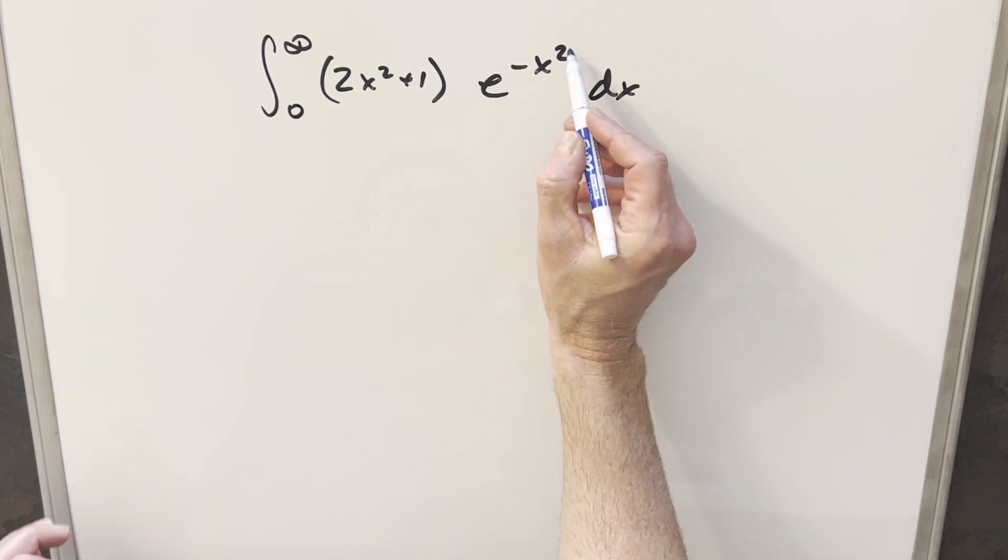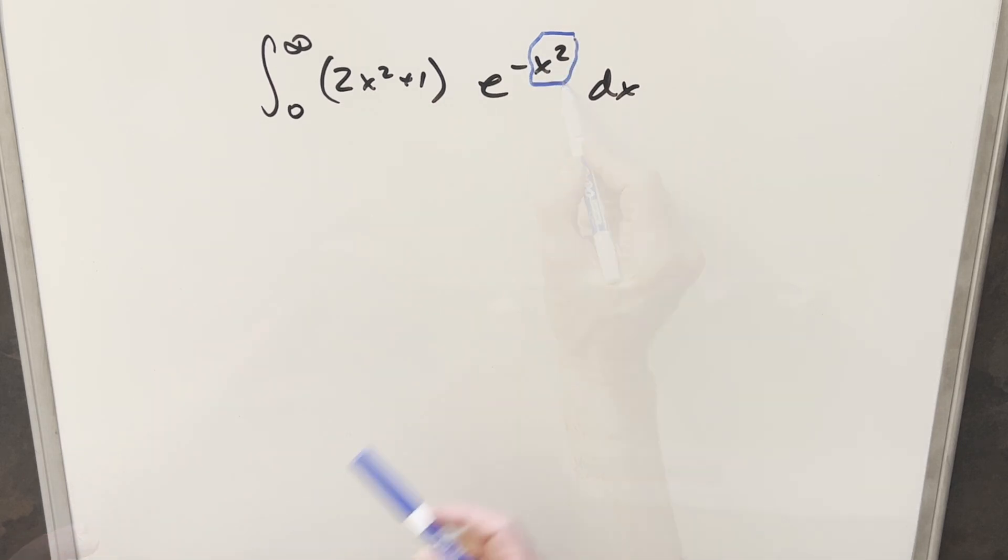Okay, the first problem I noticed here is just the fact that we've got an x squared here. This is always going to be a problem, but there are a few ways we can handle it. If we could do a u substitution, that would be one way. Also, if we could somehow get this into the form of the Gaussian integral, that would be another way. But I think for this problem, we may need to use both.